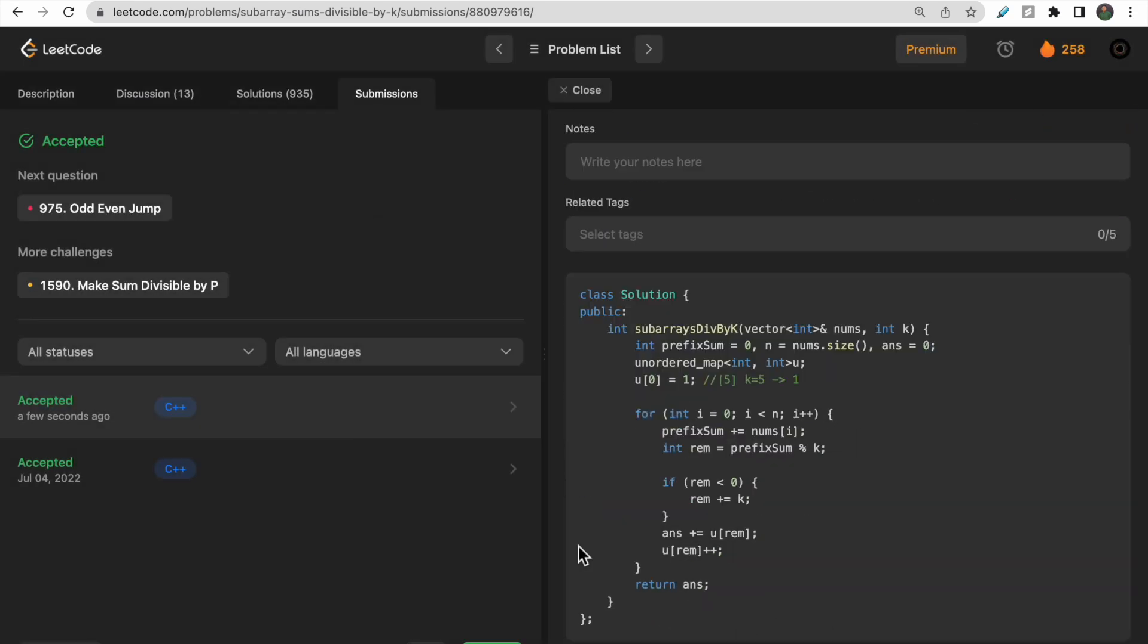And talking about the time complexity, the time complexity for this question is O(n). And the space complexity is O(n). Sorry, the space complexity would be also O(n). Because we would be storing n different prefix sums frequency or remainders. Sorry, remainders in this unordered map. So both the time complexity and the space complexity would be O(n) here.